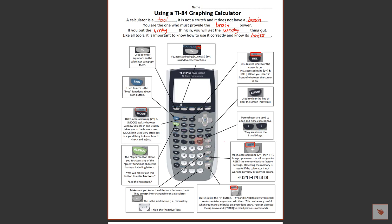Parentheses are above the 8 and 9 keys — a lot of people lose track of those. The clear button clears a line or the entire screen if hit twice. The delete key deletes whatever the cursor is on, and the insert key lets you jump into the middle of a long command and push everything further along. The F1 button — accessed via alpha + Y equals — is used to enter fractions. The Y equals button is used for graphing.